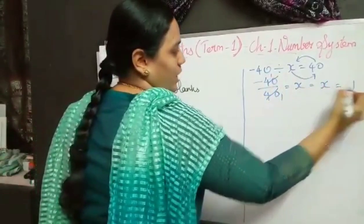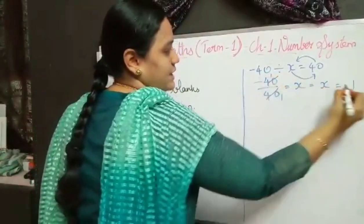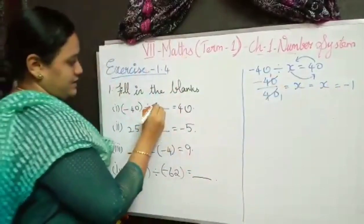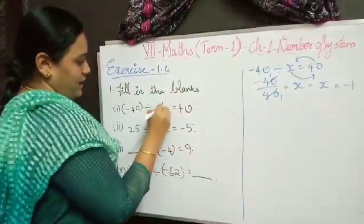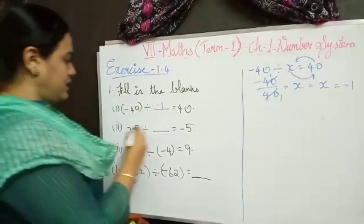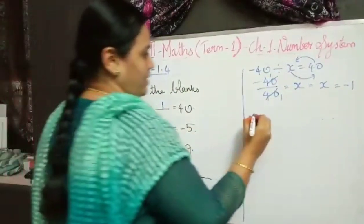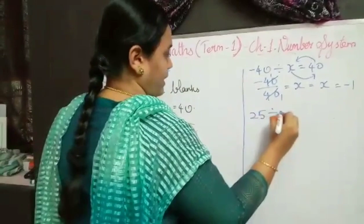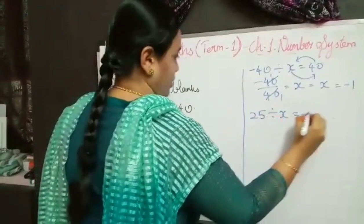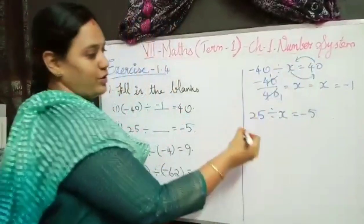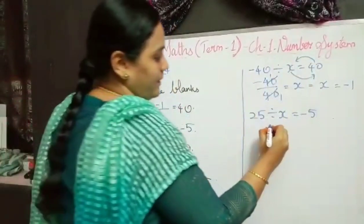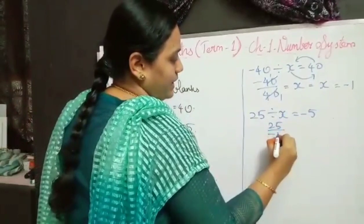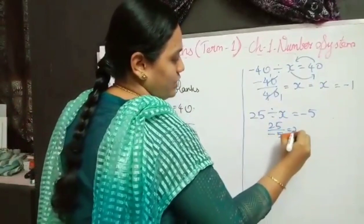So x equals 1, but different sign so minus. My answer is minus 1. Now the second one: 25 divided by x equals minus 5. Using the same procedure, 25 divided by minus 5 equals x.